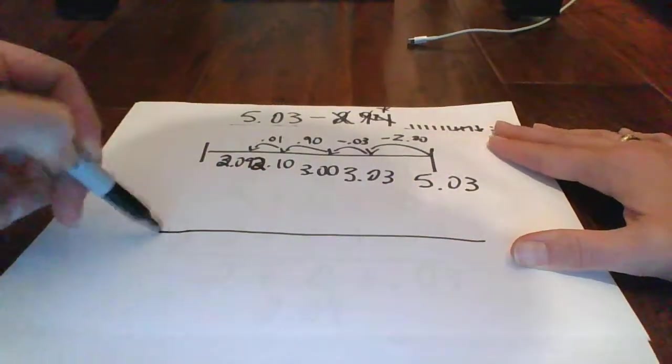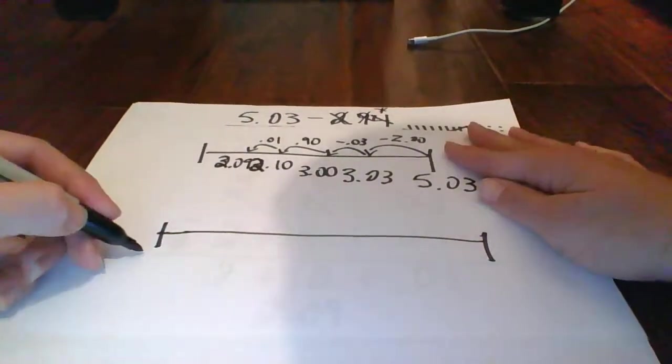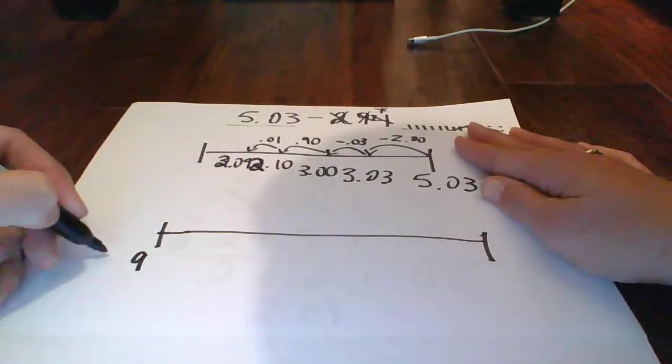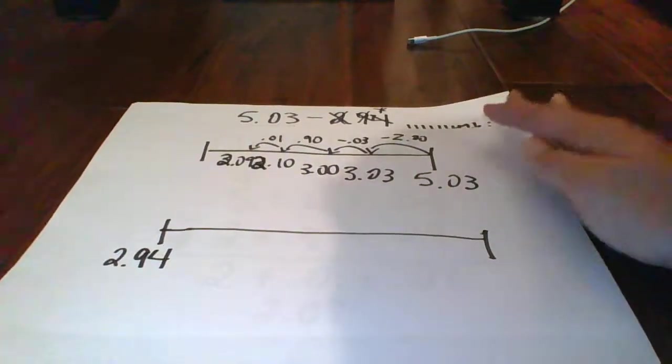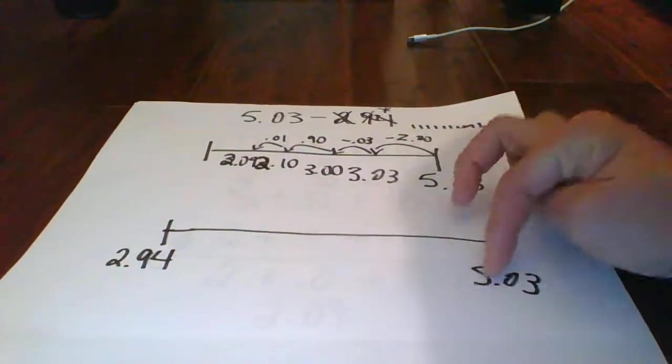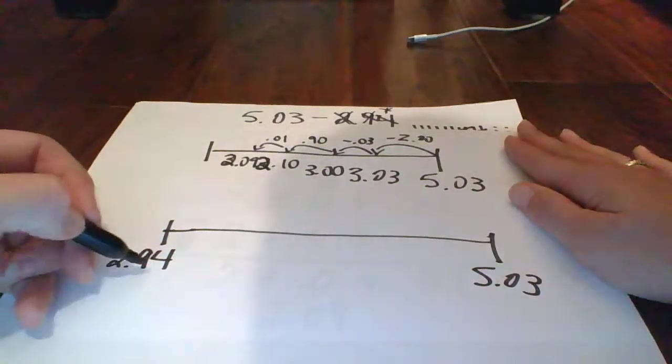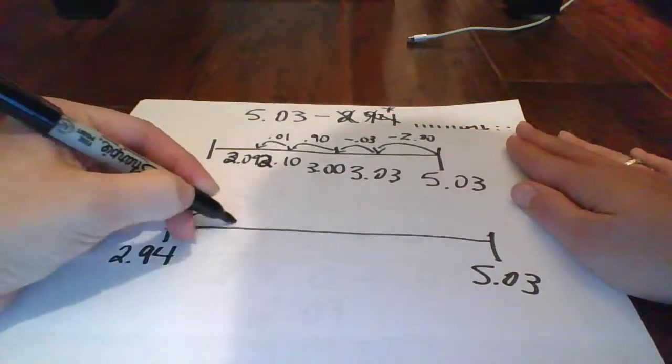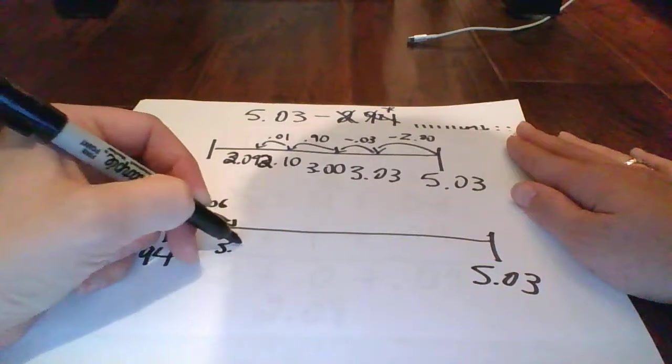Okay, so then we have the other way, the other number line adding up. This is my favorite way. You're less likely to make a mistake. So 2 dollars and 94 cents on this side, and 5 dollars and 3 cents on this side. And we're just simply trying to get to this point. So I know that I need 6 more cents here. 6 more cents to make an even 3 dollars.